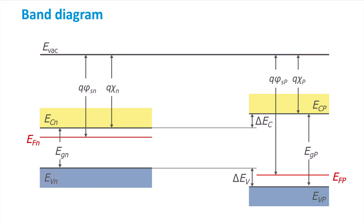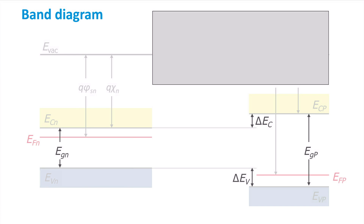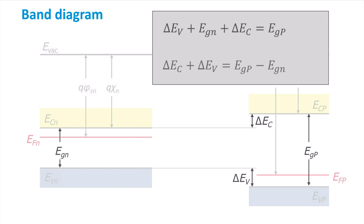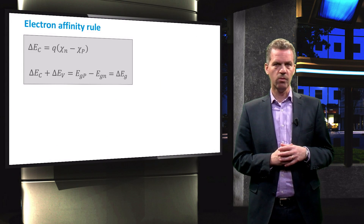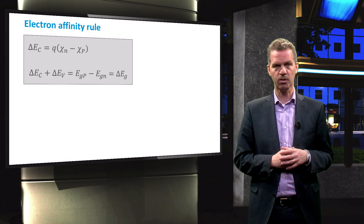The parameters shown in these figures are related to each other via two equations, which we will derive now. First, we can relate the electron affinities to each other with a simple equation. After rewriting, we obtain an equation showing that the difference between the conduction band edges is equal to the difference in electron affinities of the two materials. Next, we can relate the band gaps of the two materials, resulting in a relation showing that the difference between the valence and conduction band edges is equal to the difference between the band gaps, written as delta Eg. Together these form the so-called electron affinity rule, which states that all energy differences between the two materials can be expressed in the electron affinities.